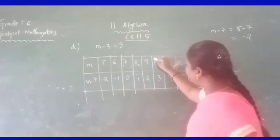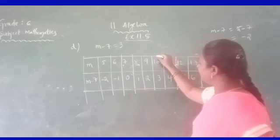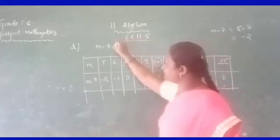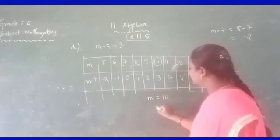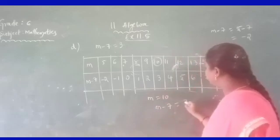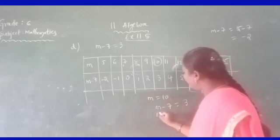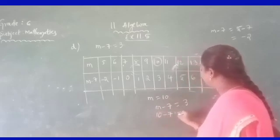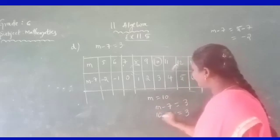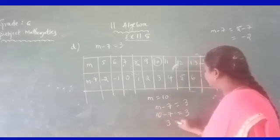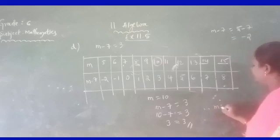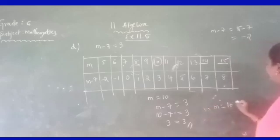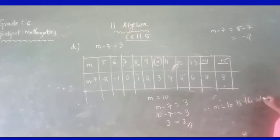We need to find when M minus 7 equals 3. If M equals 10: 10 minus 7 is 3, and 3 is equal to 3 — both left hand side and right hand side are equal. Therefore, M equals 10 is the solution of the equation.